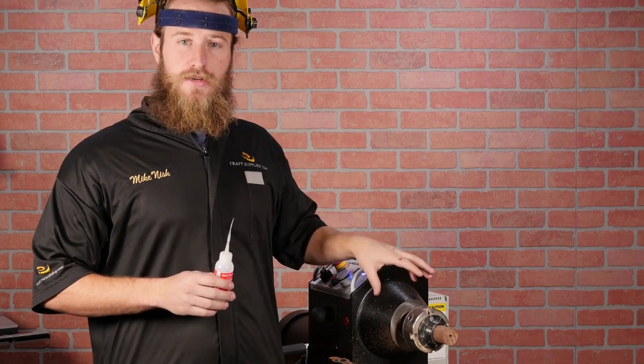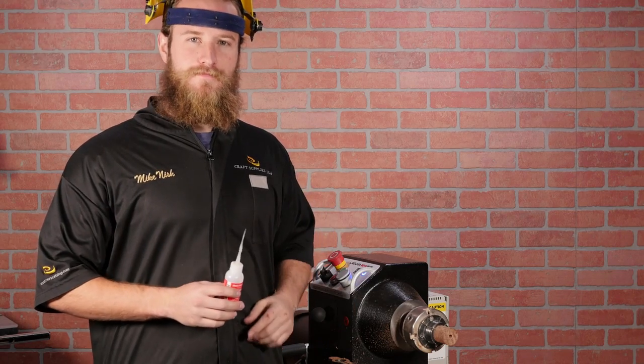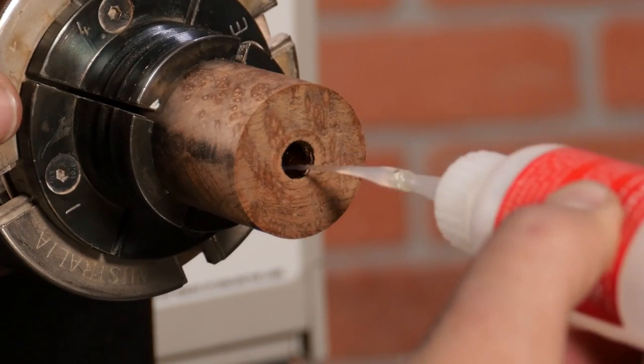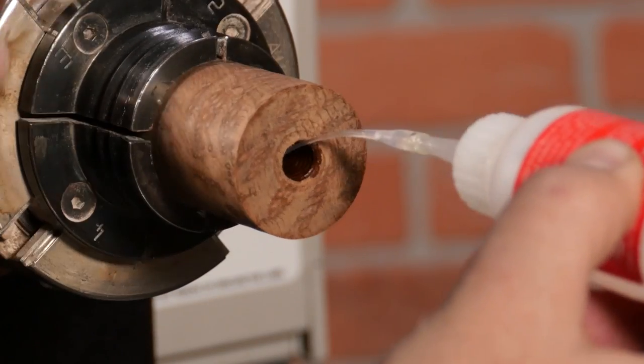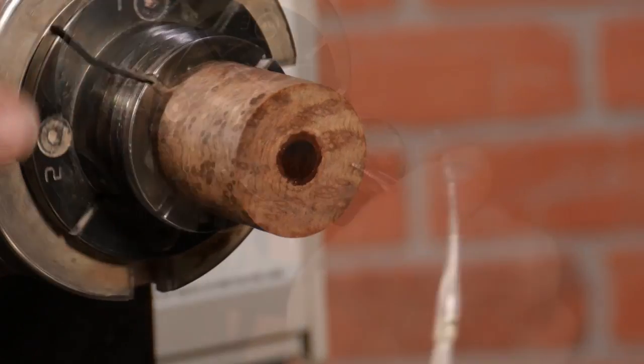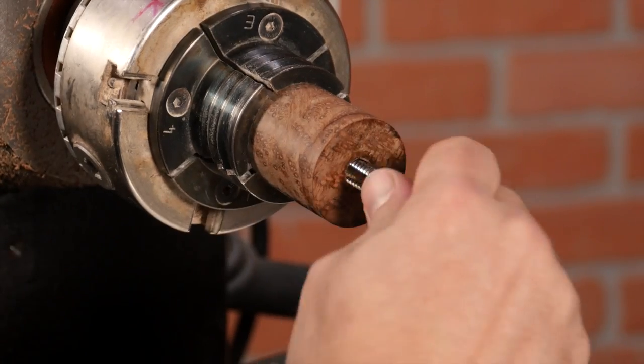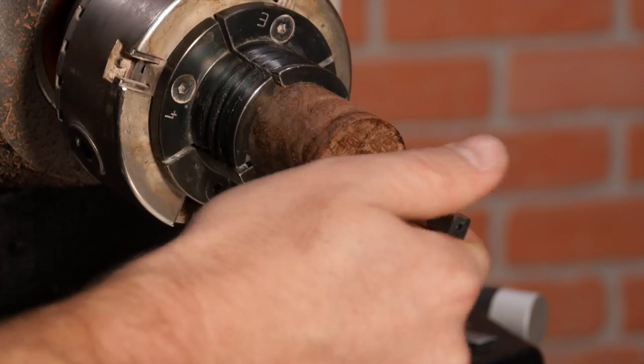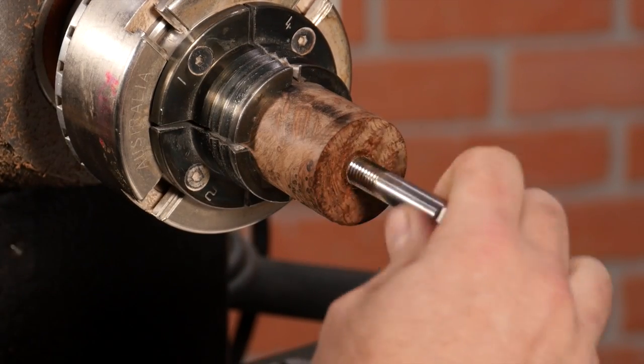Now that the threads are cut, we've got one more quick tip. Saturate the threads with thin CA glue. This really stiffens up the threads, making them much stronger. Once the glue dries, run the tap through one more time to clean up the threads. It doesn't take long and it makes a huge difference.